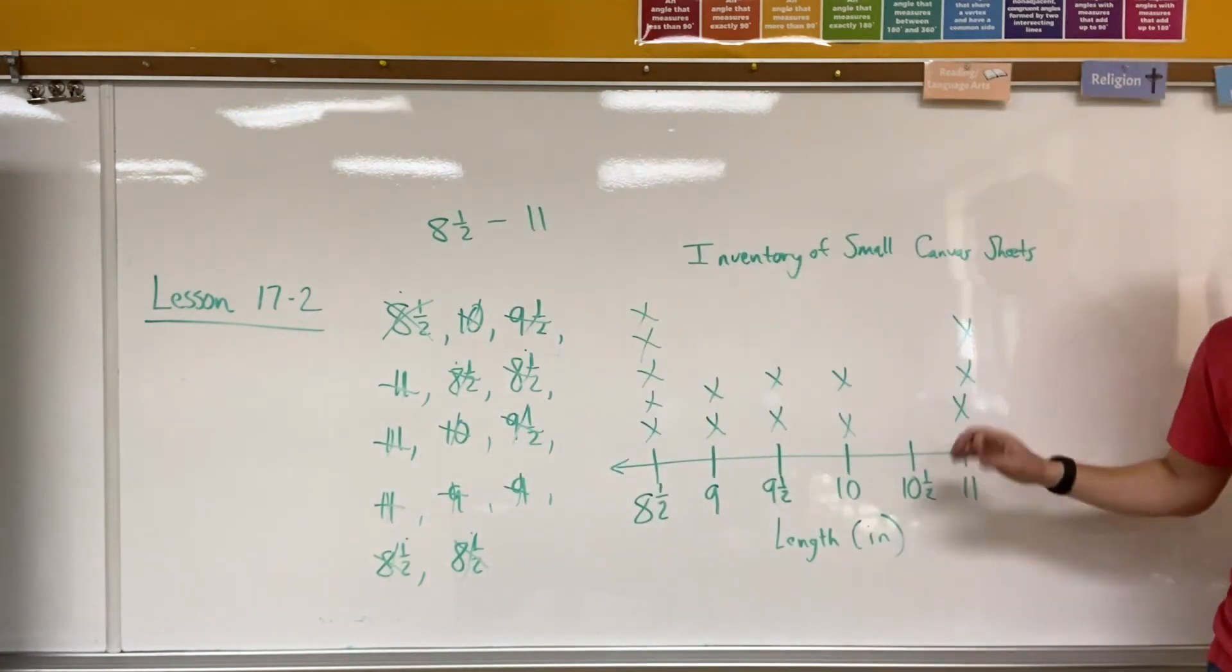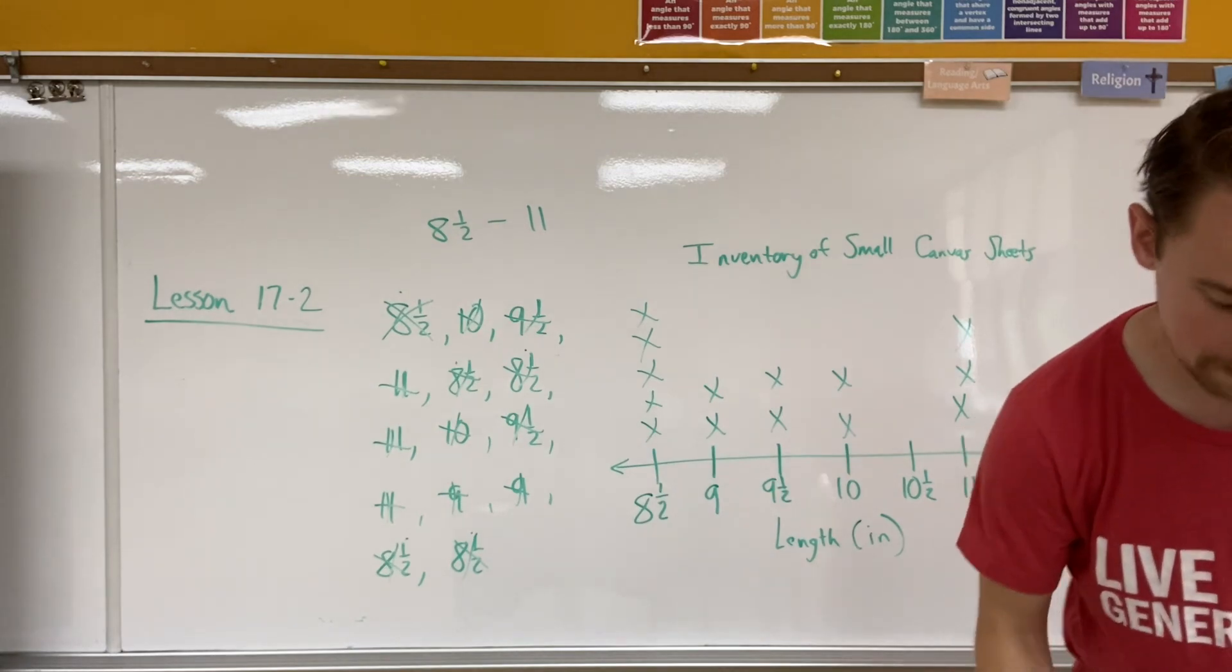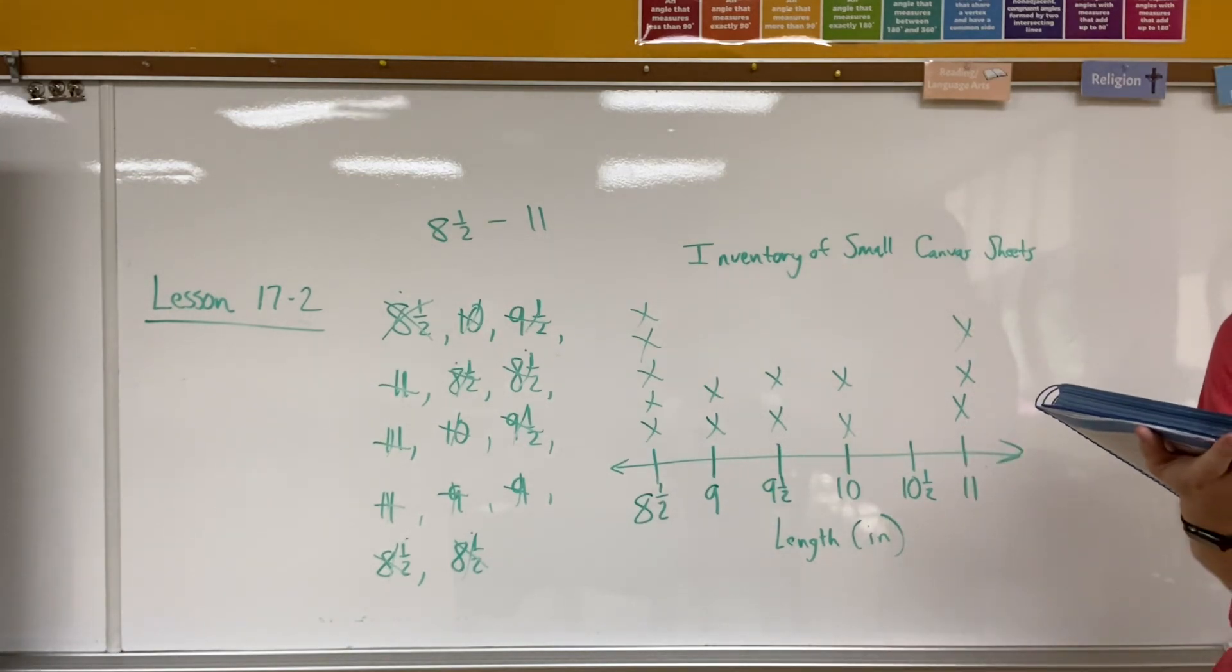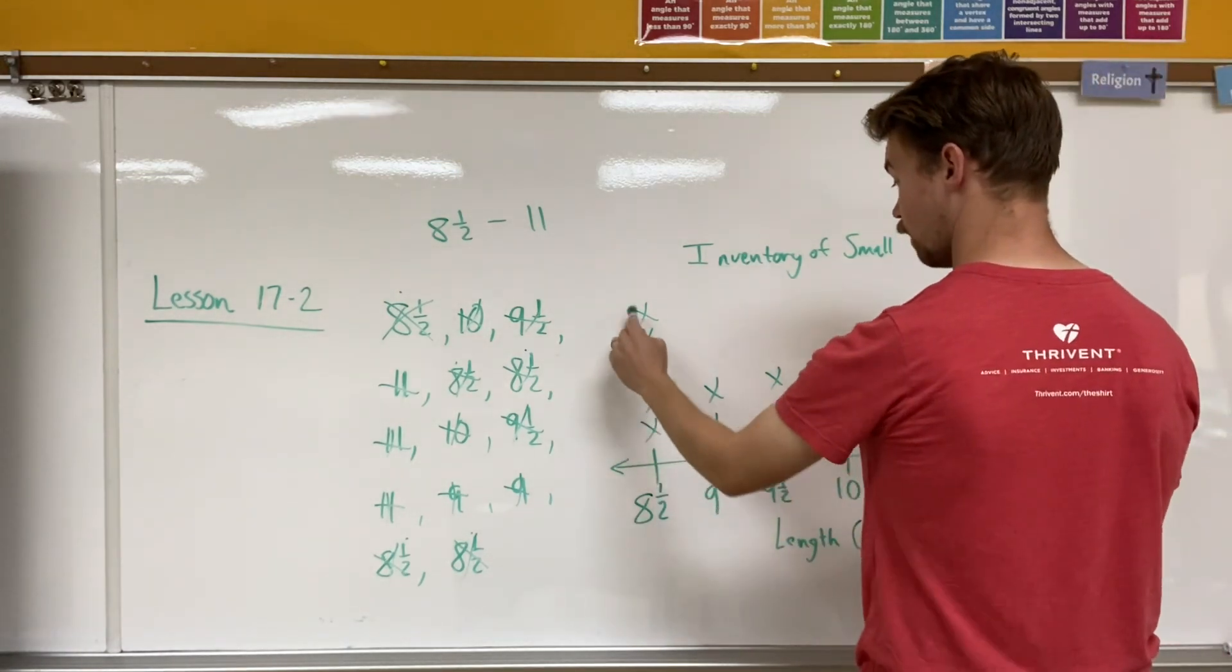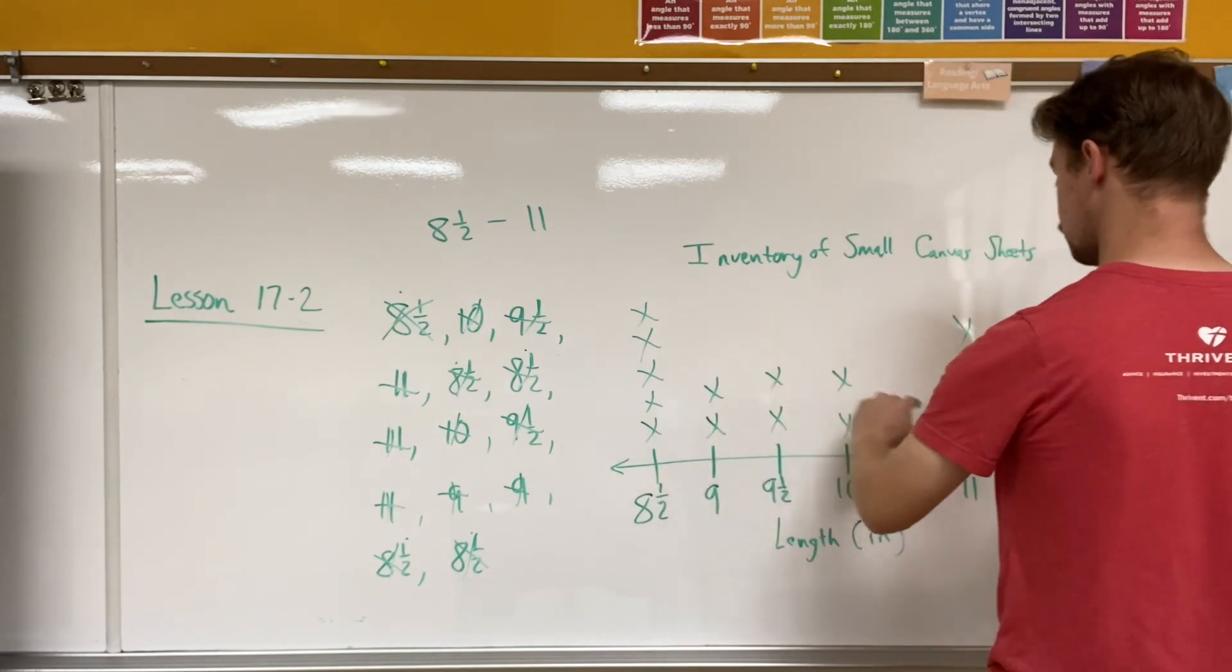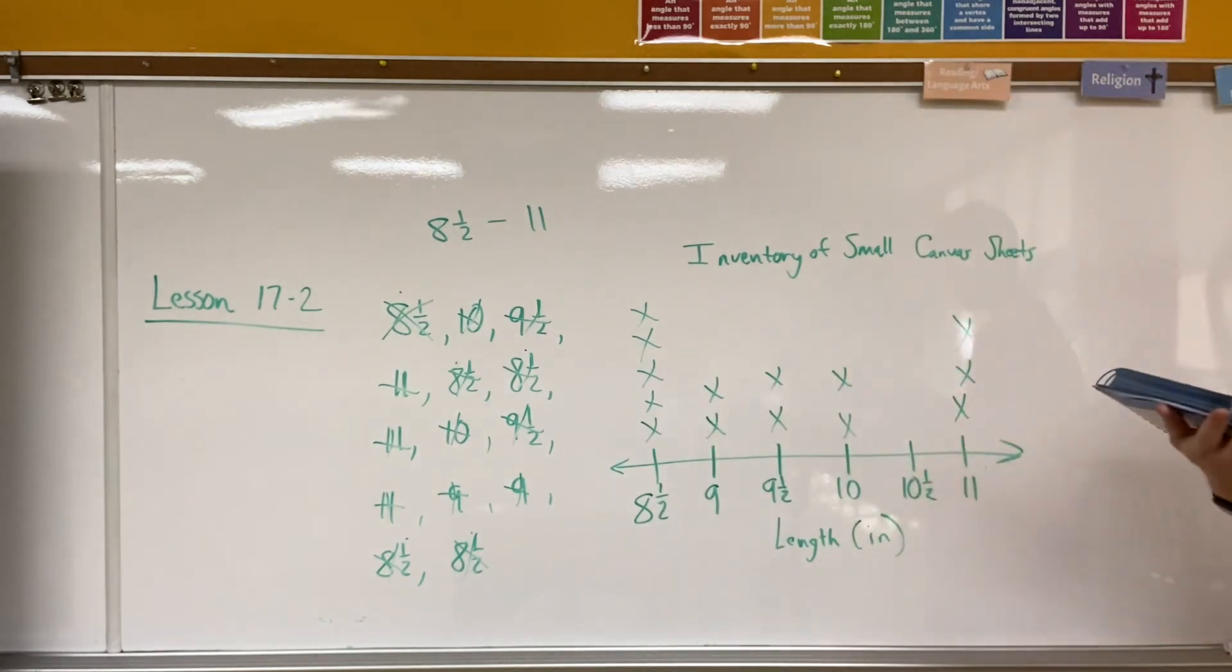So I've transferred the data onto a line plot. Now let's see if there's any questions for that. All right, since there are 14 sheets of canvas, there are 14 x's on the line plot. Let's count them out. One, two, three, four, five, six, seven, eight, nine, ten, eleven, twelve, thirteen, fourteen. So there are 14 sheets. Awesome.